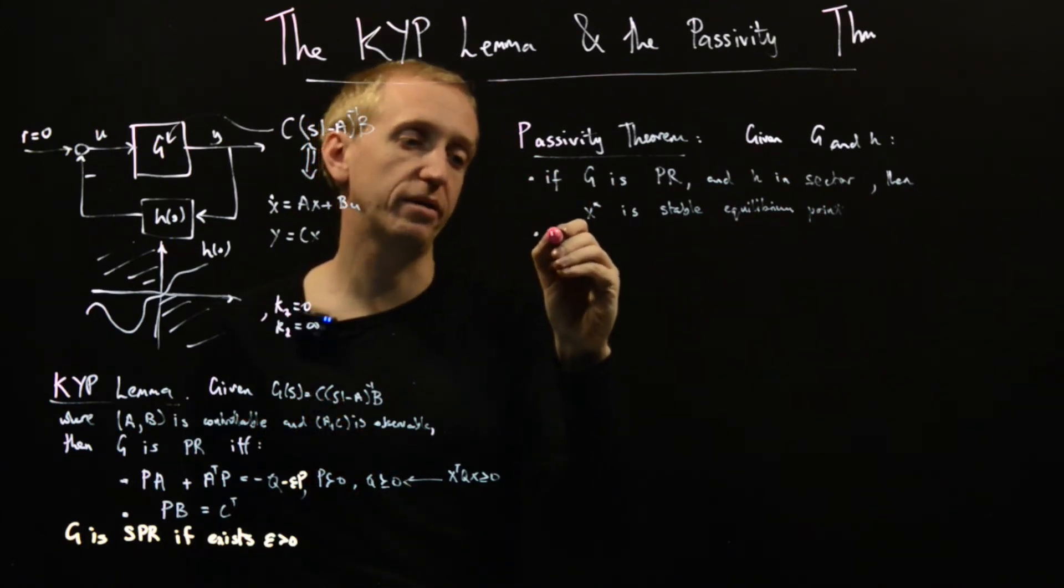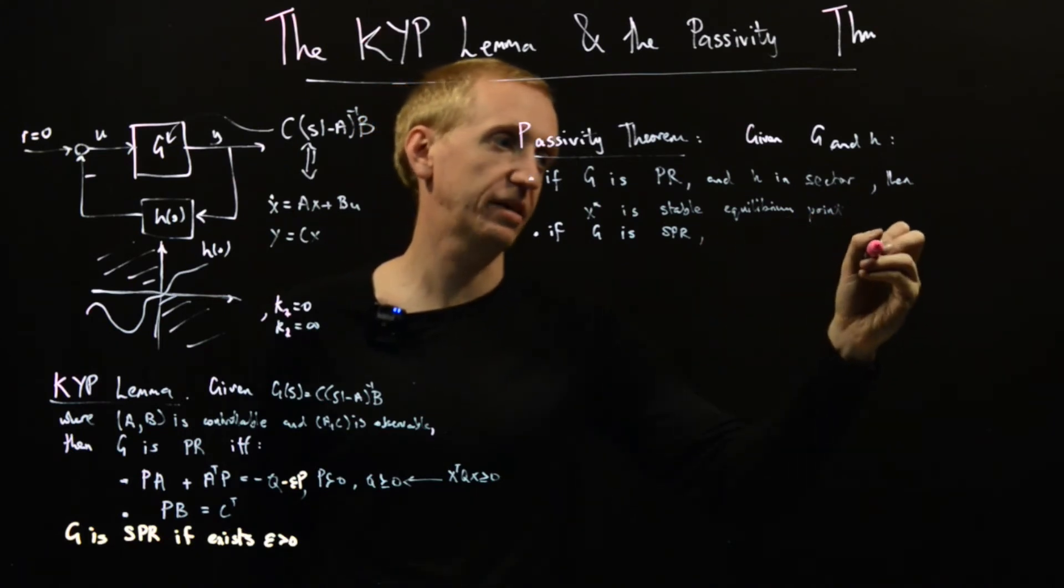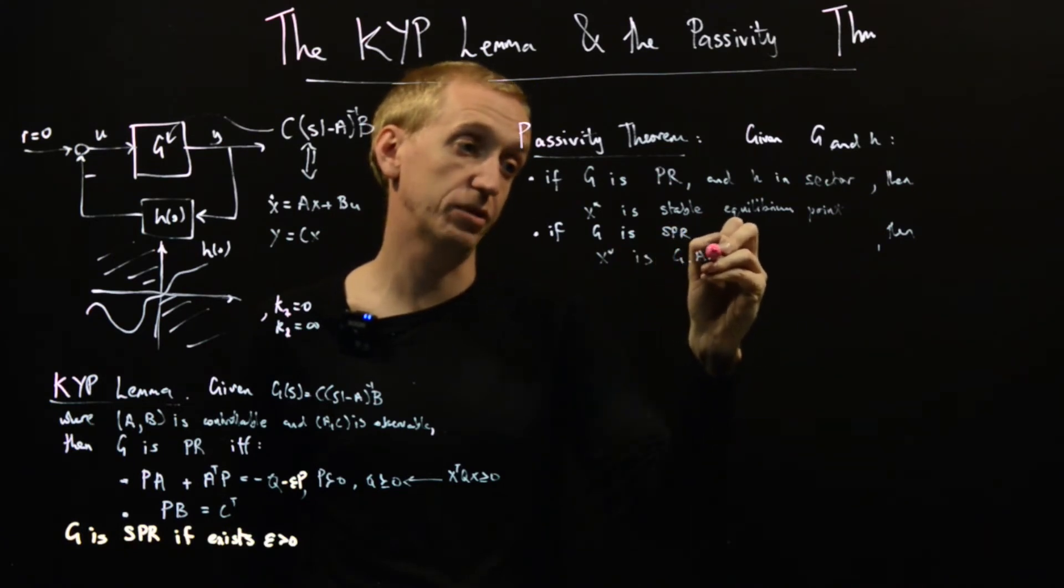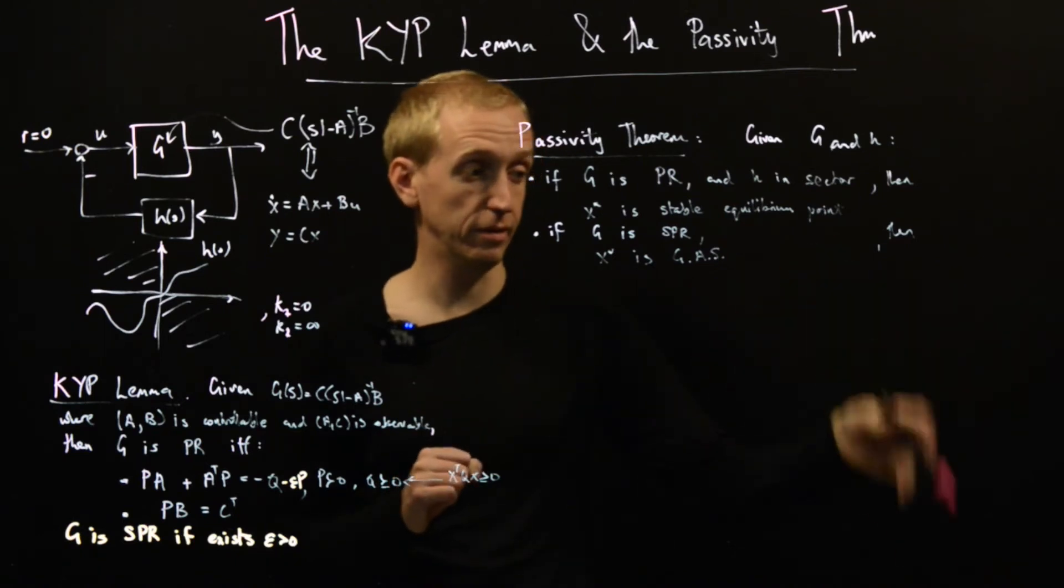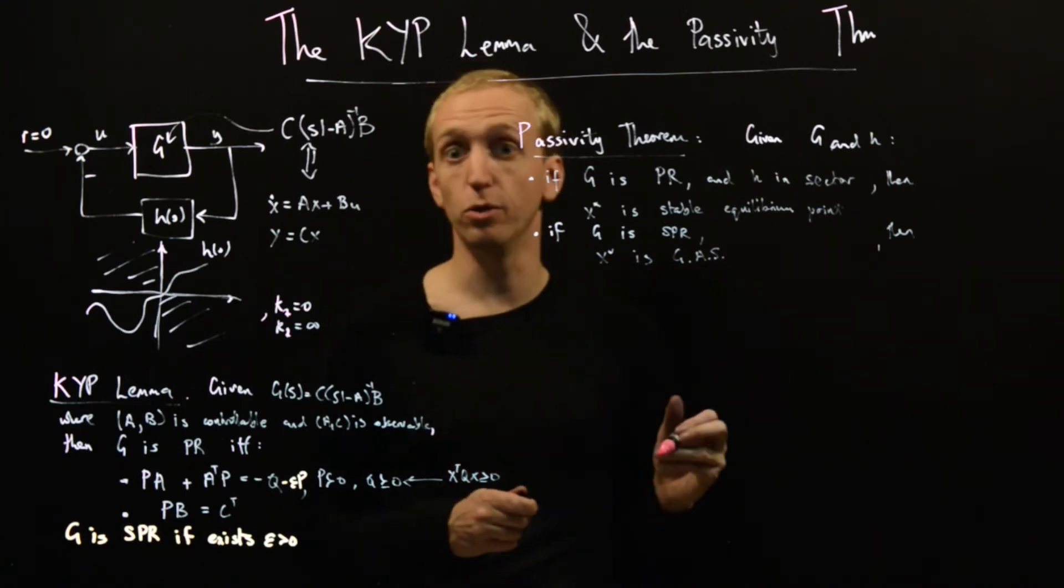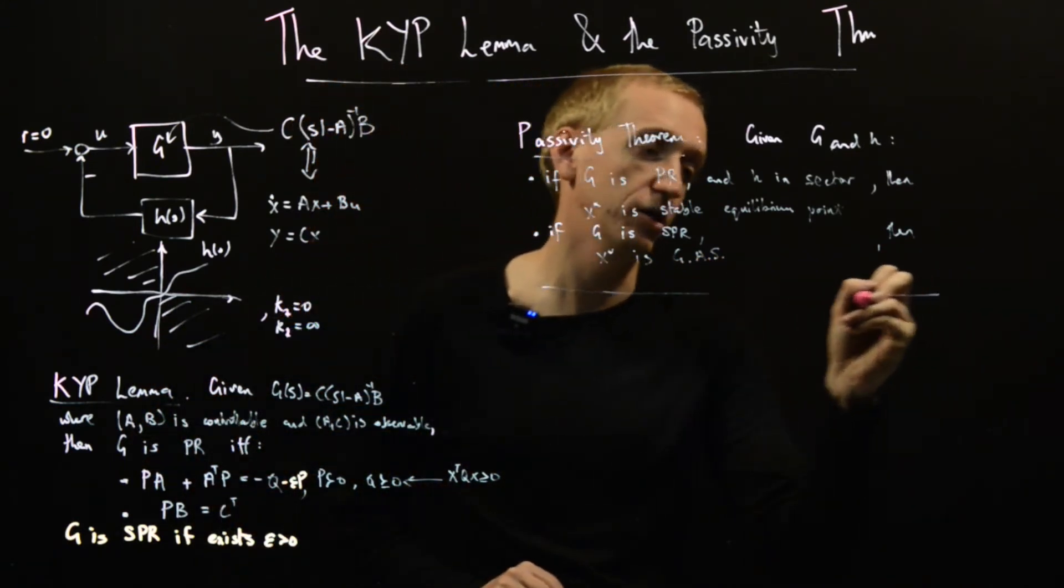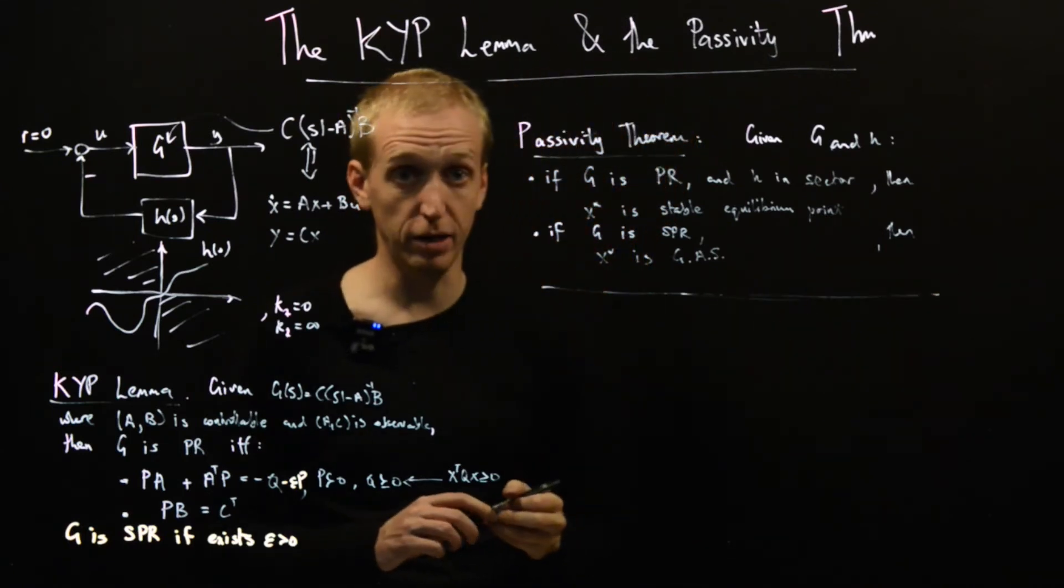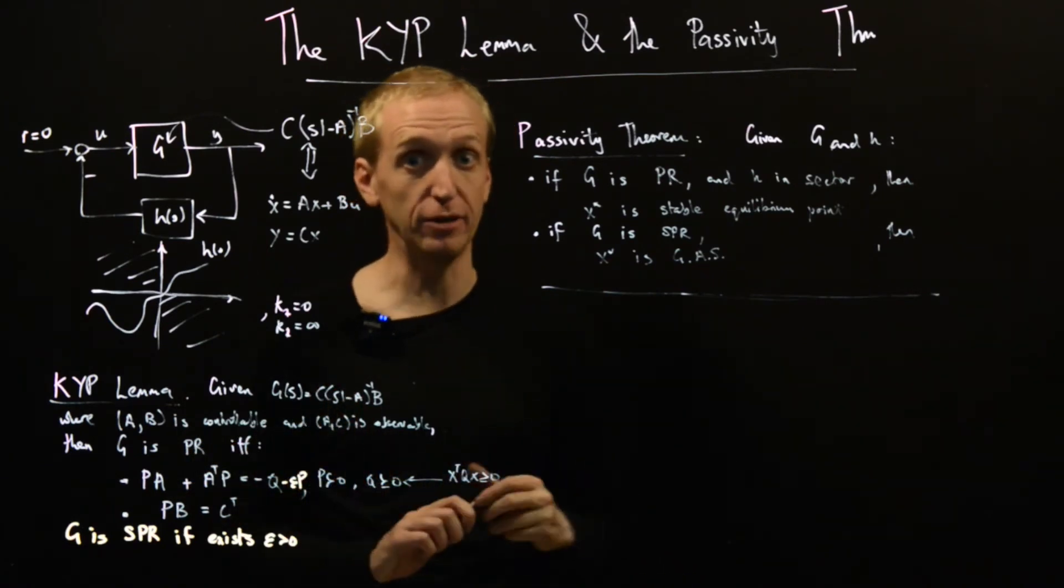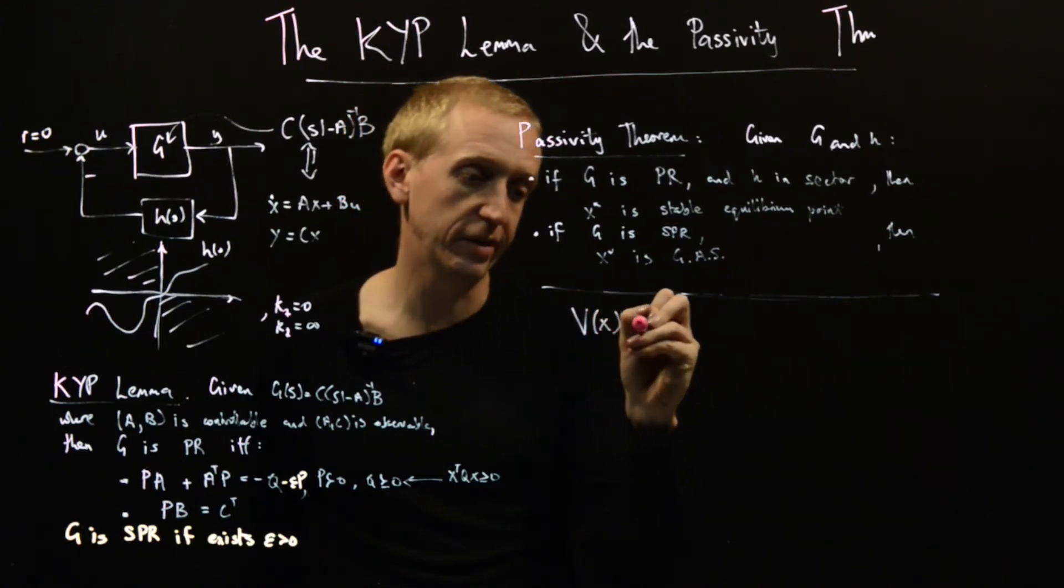Then we have the strengthening that if G is strictly positive real and H is in the sector, then x star is globally asymptotically stable. If we don't touch the vertical line except maybe when we come to the origin, then we actually get something stronger, which is global asymptotic stability. The KYP lemma is going to be what allows us to prove this using our Lyapunov arguments from before. The key thing it gives us is this matrix P, which is the Lyapunov function that we need.